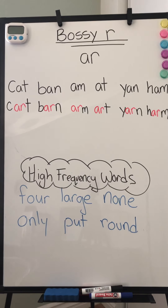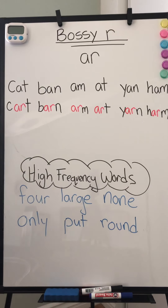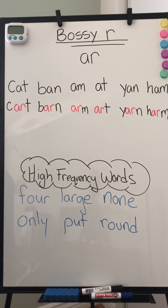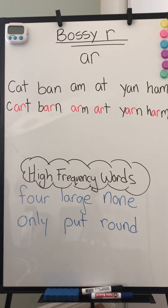Good morning. Today we're going to be looking at a new skill — bossy R. Bossy R likes to take control over vowels. So when R is paired up with a vowel, the R says no, no, no vowel. I'm going to be the boss here and I'm going to make all the sounds. I'm going to sound like R. So bossy R sounds like R. If you notice here,